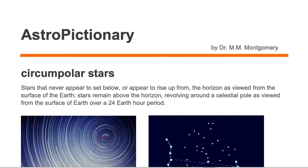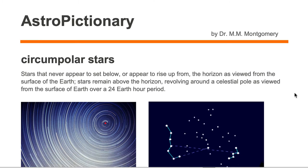Circumpolar stars are stars that never appear to set below or appear to rise from the horizon as viewed from the surface of Earth. They are stars that remain above the horizon, revolving around a celestial pole as viewed from the surface of Earth over a 24-hour Earth period.